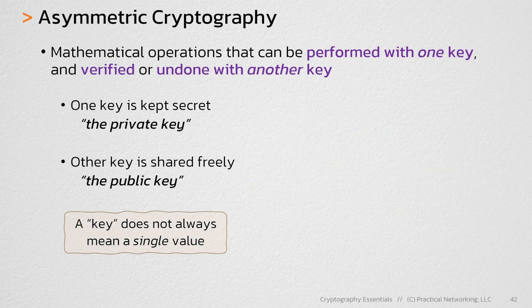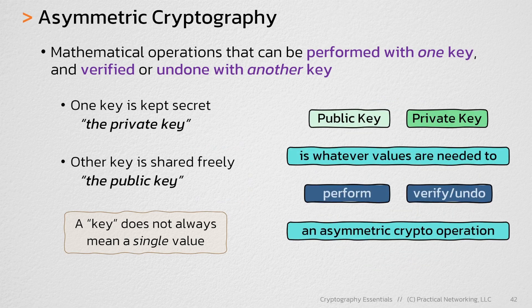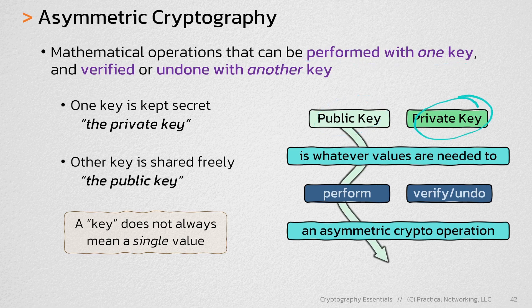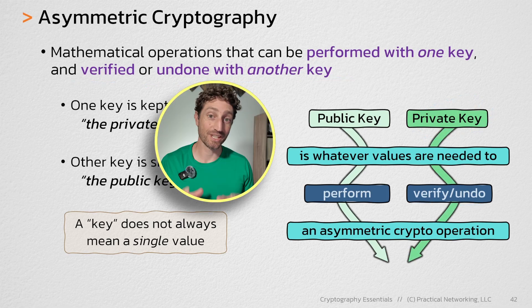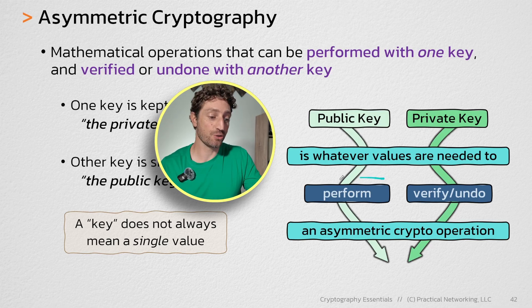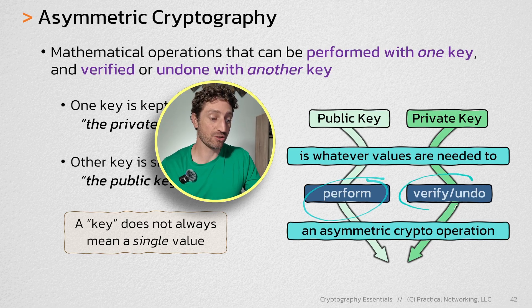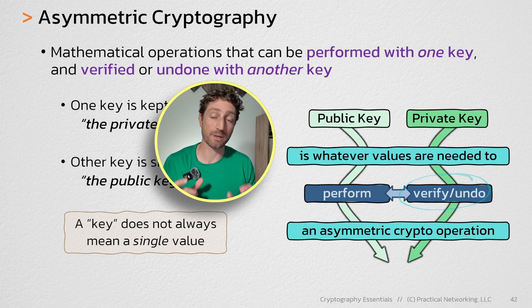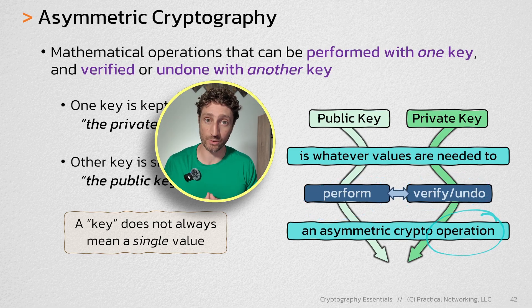A better way to understand it is like this: the public key is whatever values are necessary to perform an asymmetric cryptography operation, and the private key is whatever values are needed to either verify or undo that asymmetric crypto operation. The next thing you have to understand is that the keys you use to perform an operation and the keys you use to verify an operation can sometimes be switched — it all comes down to what operation you happen to be doing.